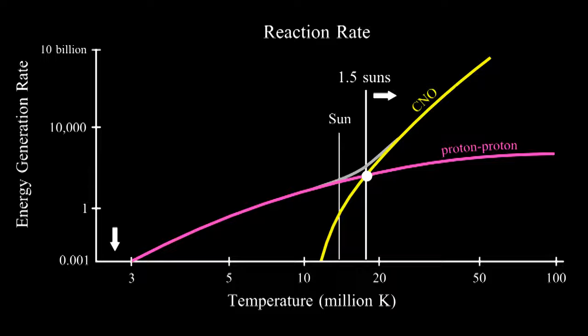Neither reaction can happen if the temperature drops below 3 million degrees Kelvin. This is the lowest temperature a star can have. A star must have at least 8% the mass of the sun to be a real star.